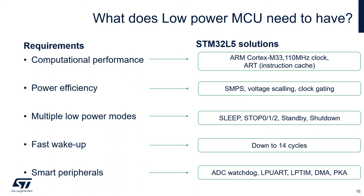The second requirement for an MCU is power efficiency. This feature helps reduce current consumption in the active phase of the application. STM32 L5 is equipped with an internal SMPS, which can significantly reduce consumption. In addition, scaling of voltage and gating of clocks that supply and feed resources of the STM32 L5 can further reduce consumption in the active phase.